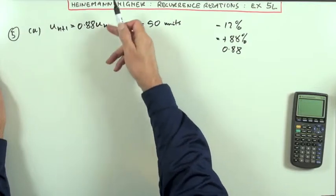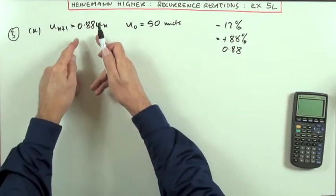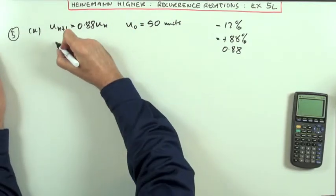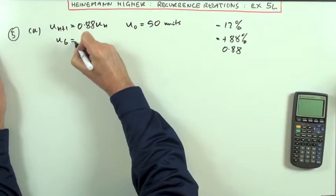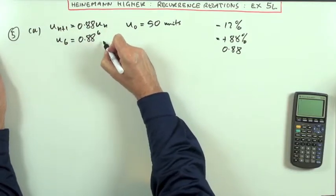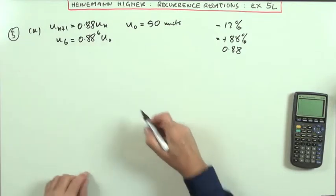So this isn't the type of recurrence relation I'll need to plod through. There's only one thing happening, so I can use a formula there. Straight away I can say that 6 hours later it's going to be 0.88 to the power 6 times U₀.